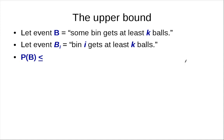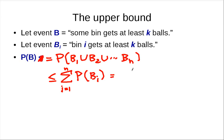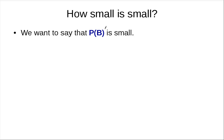So the probability of B equals P(B_1 union B_2 union ... union B_n), and from the union bound, this is at most the sum from i=1 to n of P(B_i). From our previous analysis, each P(B_i) is at most (e/k)^k, and there are n of them and they are all equal. So P(B) is at most n times (e/k)^k. We want to say that this probability of B is small — but what does it mean for something to be small?